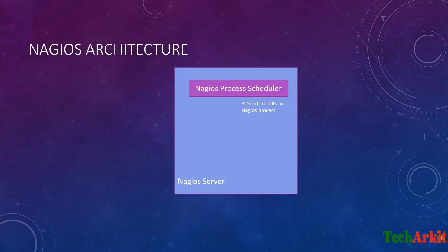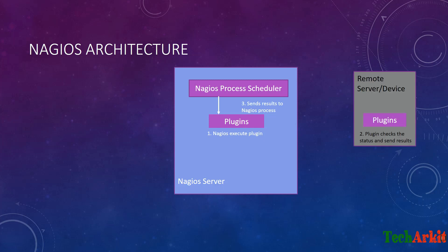The Nagios server has a Nagios process scheduler and some built-in plugins, such as check_nrpe, check_nt, check_snmp, and check_ncpa. These plugins execute on the remote server. If you are monitoring a remote Windows server, you install the Nagios agent on that remote Windows server, which contains some internal plugins on that host.